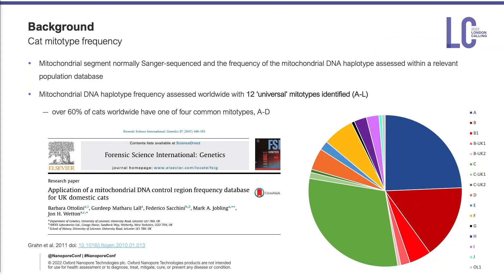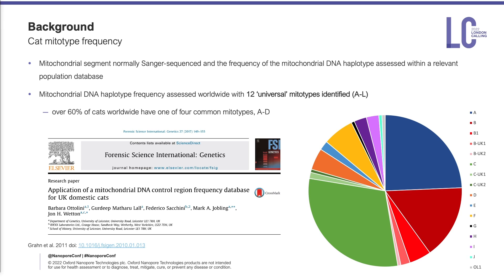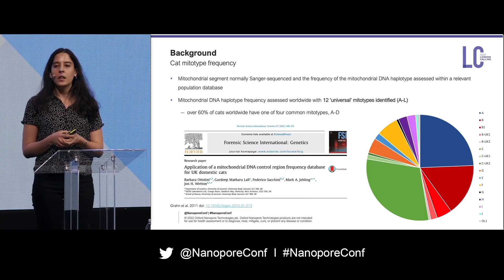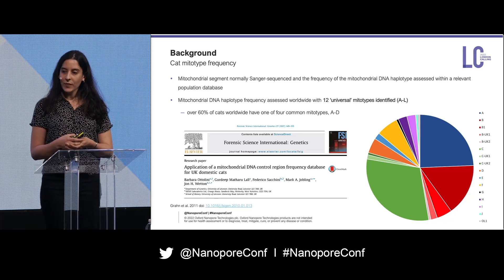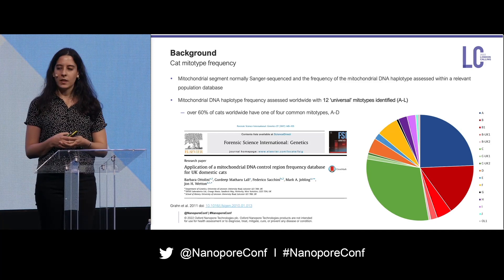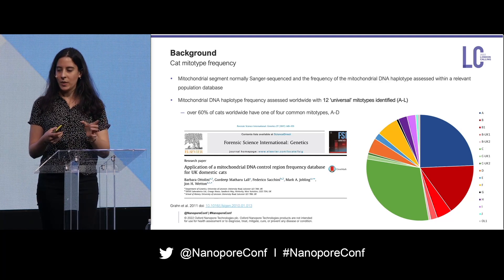Once you've Sanger sequenced this 402 base pair region, you'd normally assess the frequency of the profile within a relevant population database. This is dependent on geographical location, so the frequencies can change. Worldwide there have been 12 universal mitotypes identified, A to L, and in the UK just over 90% of cats have one of these 12 universal mitotypes. Over 60% of cats worldwide have one of four common mitotypes, A to D. At the University of Leicester they built a cat population database using 152 cats, just using this 402 base pair region.